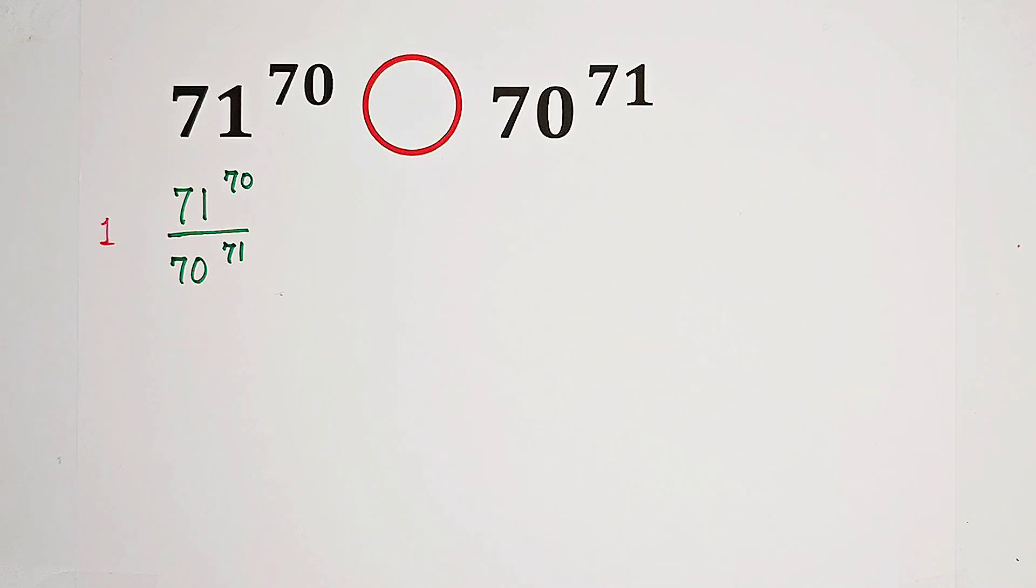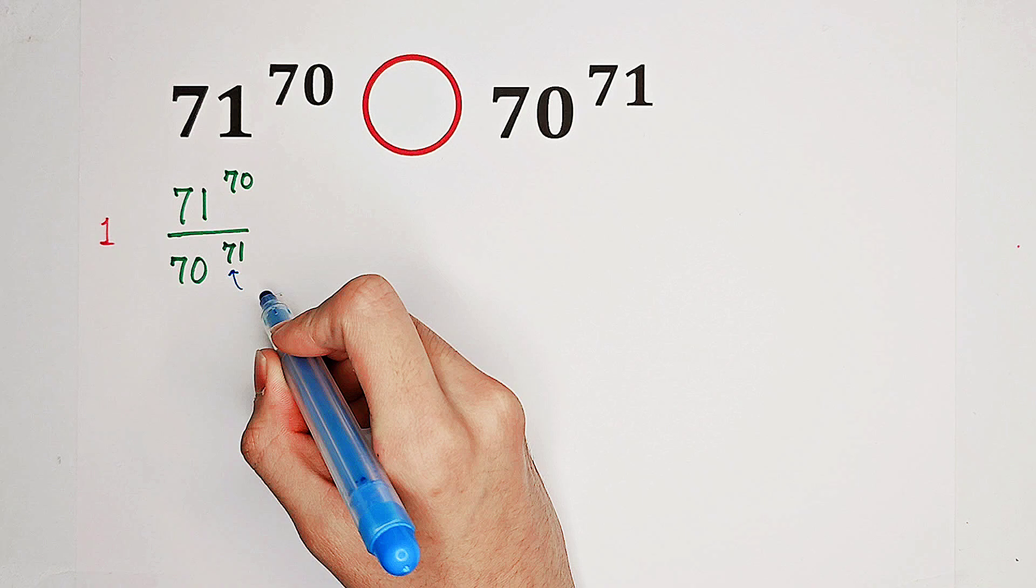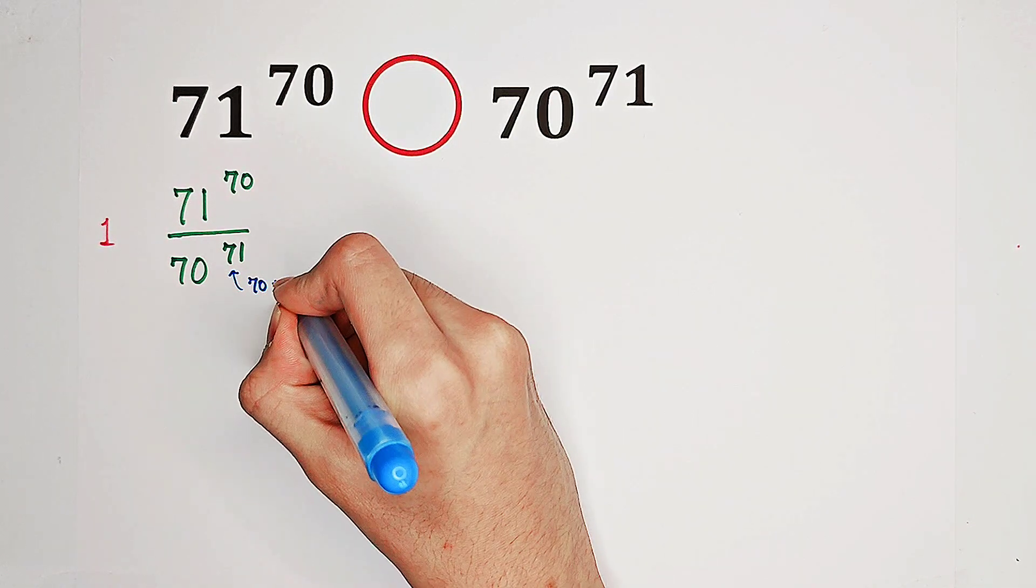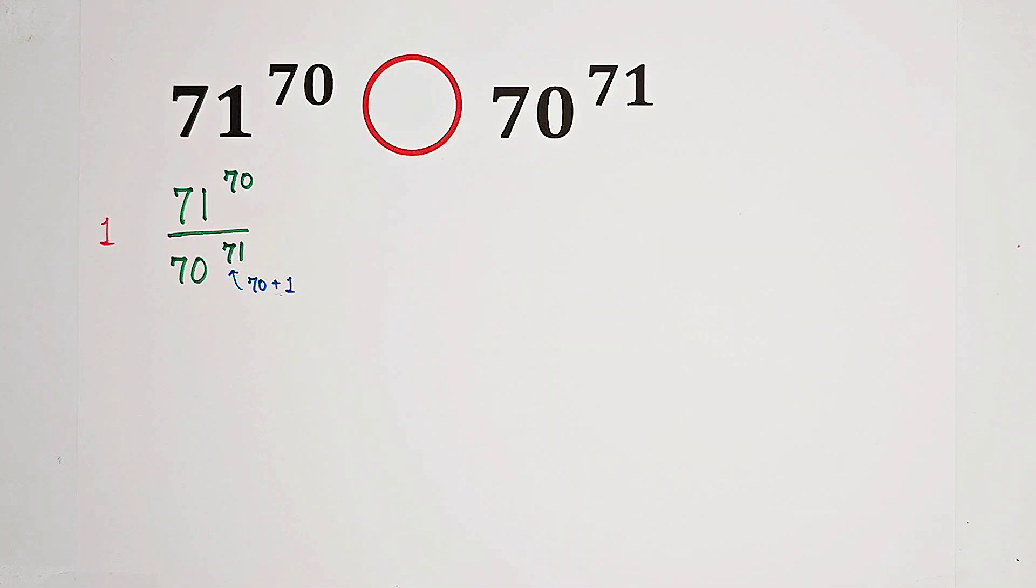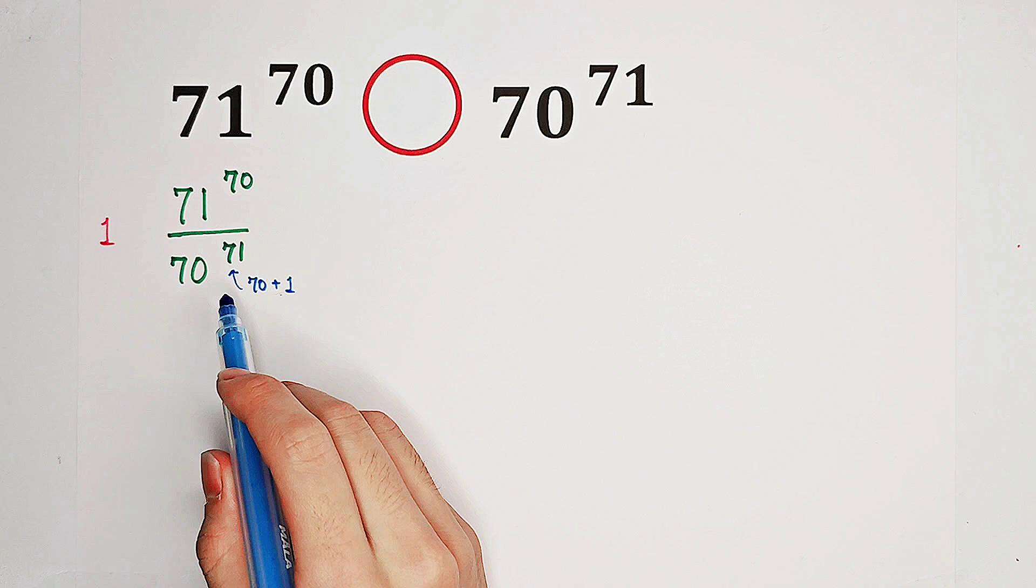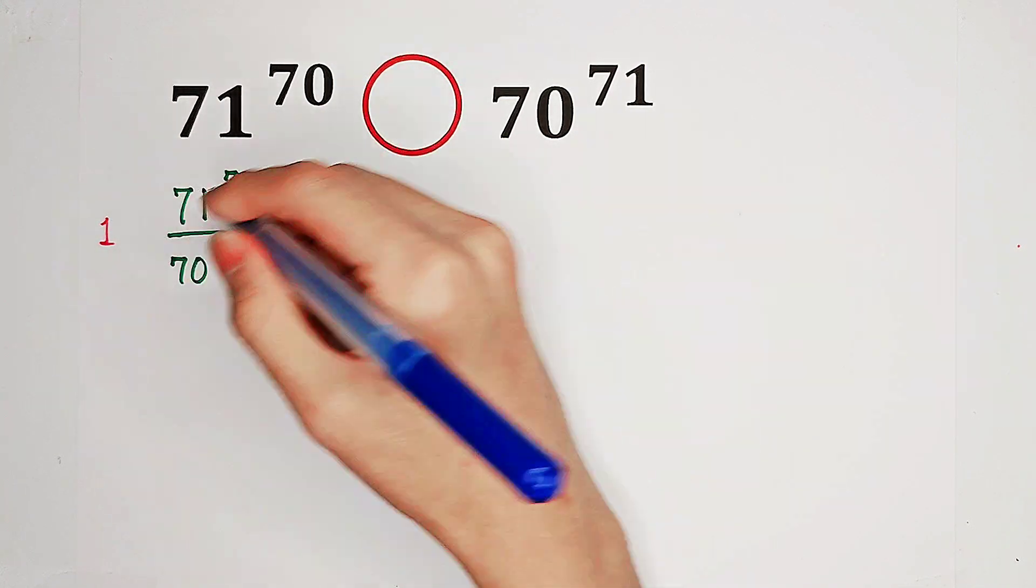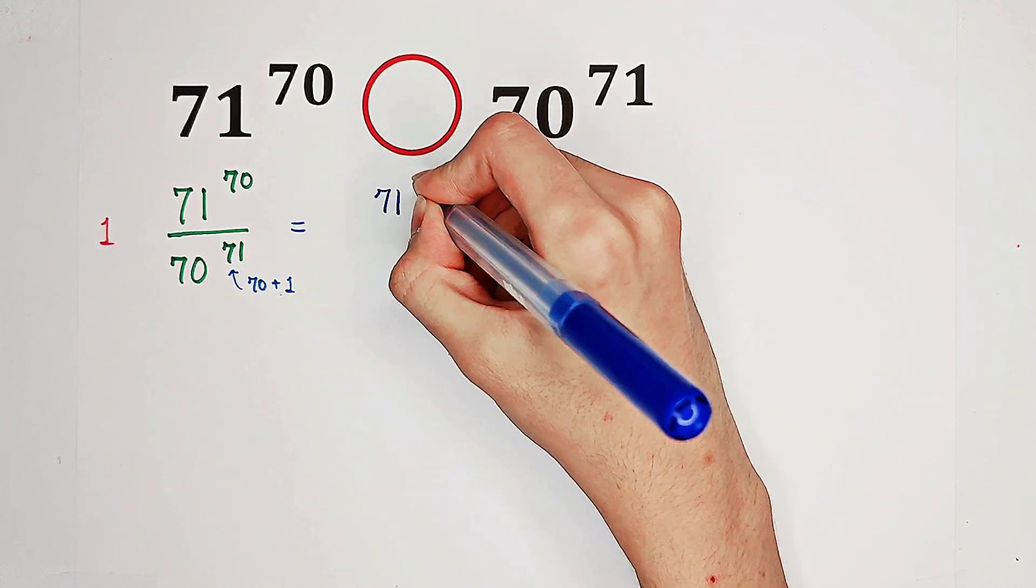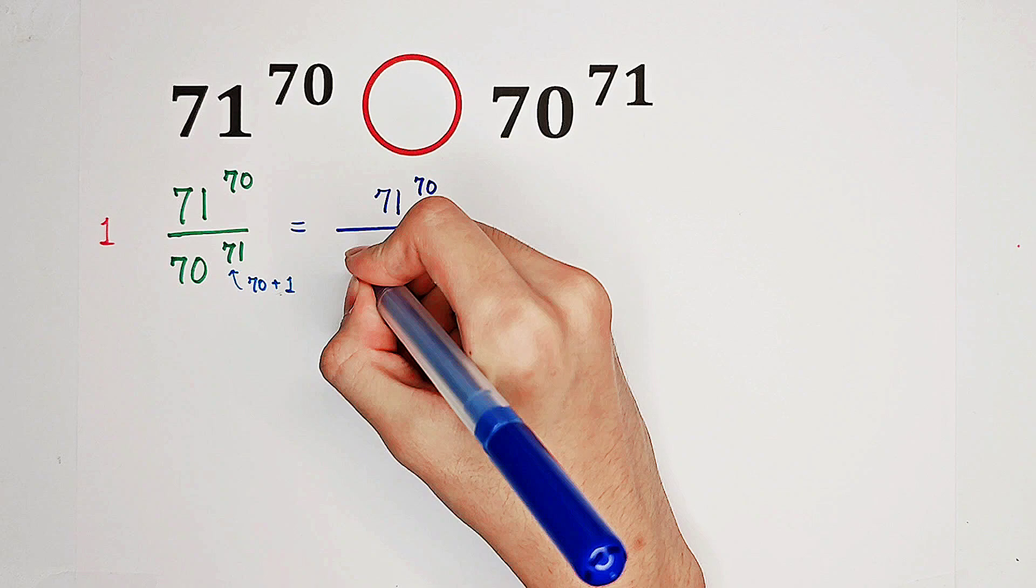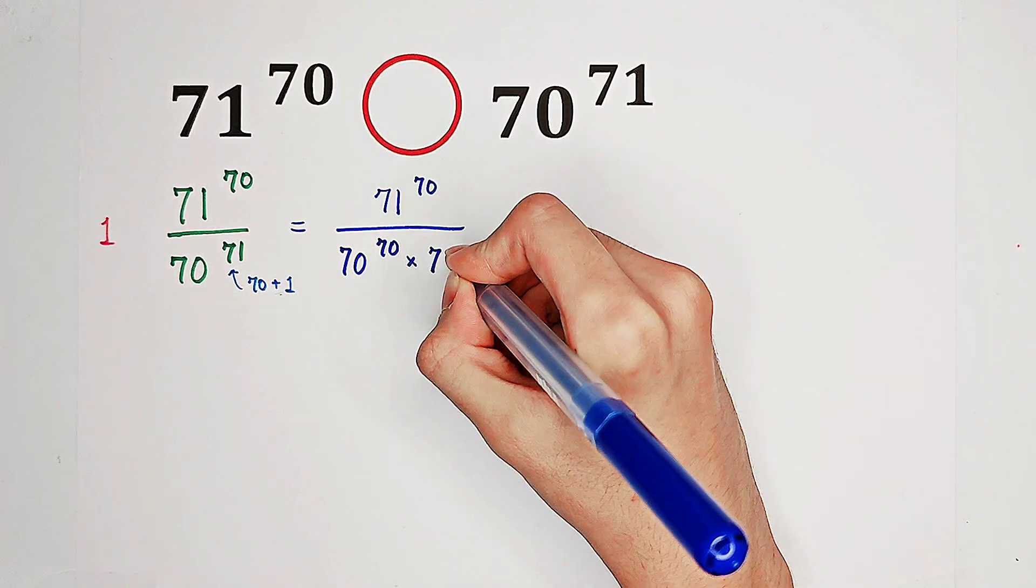we have 71 as exponent on the denominator. And this 71 can be written as 70 plus 1. Which means, we can separate this 70 to the power of 71 into 70 to the power of 70 times 70. This can be written as 70 to the power of 70, then times 70.